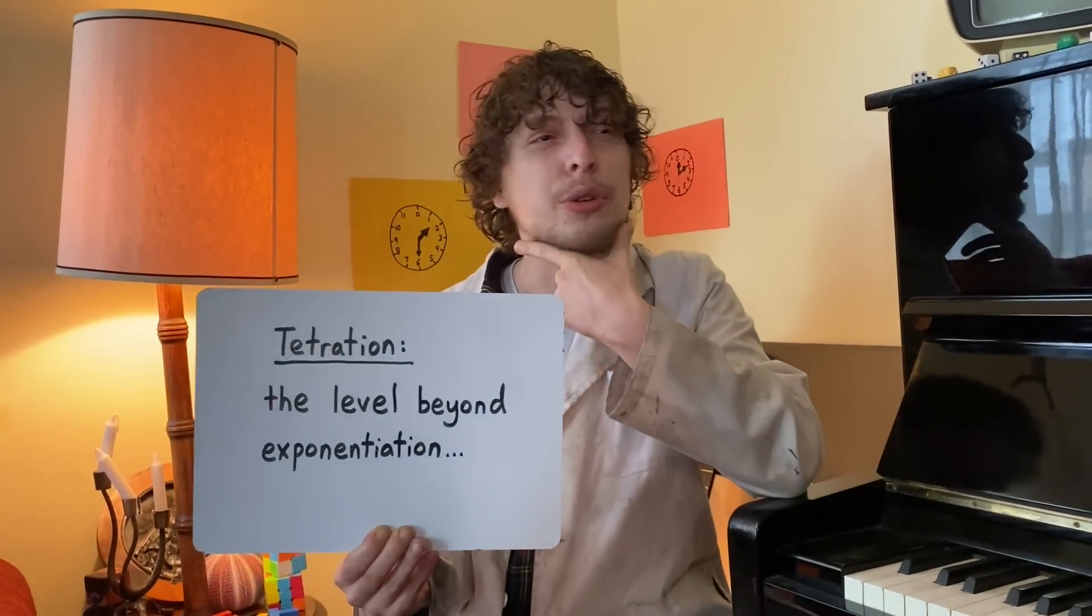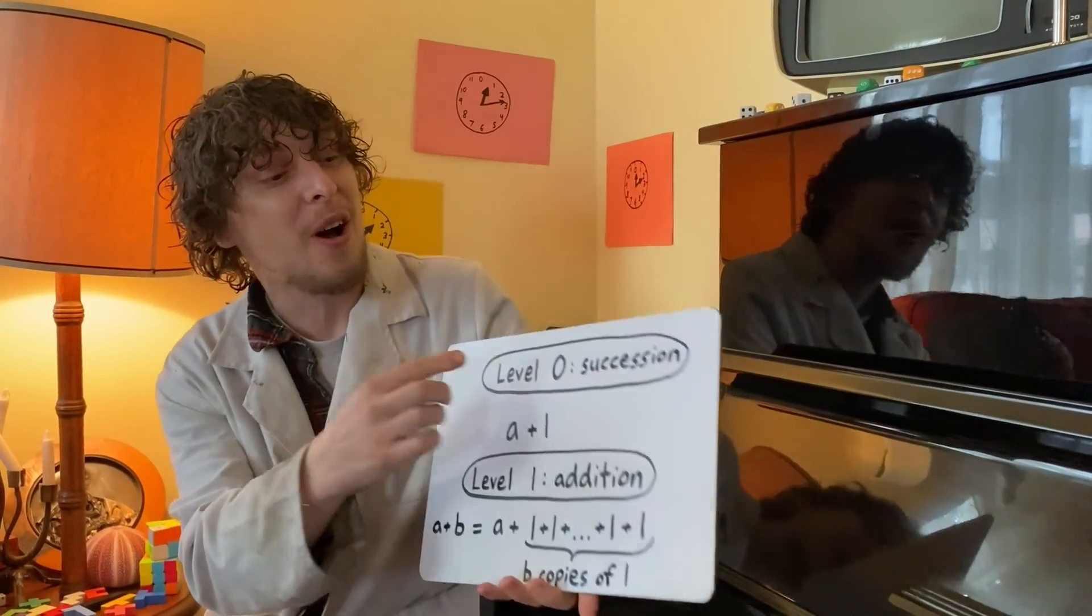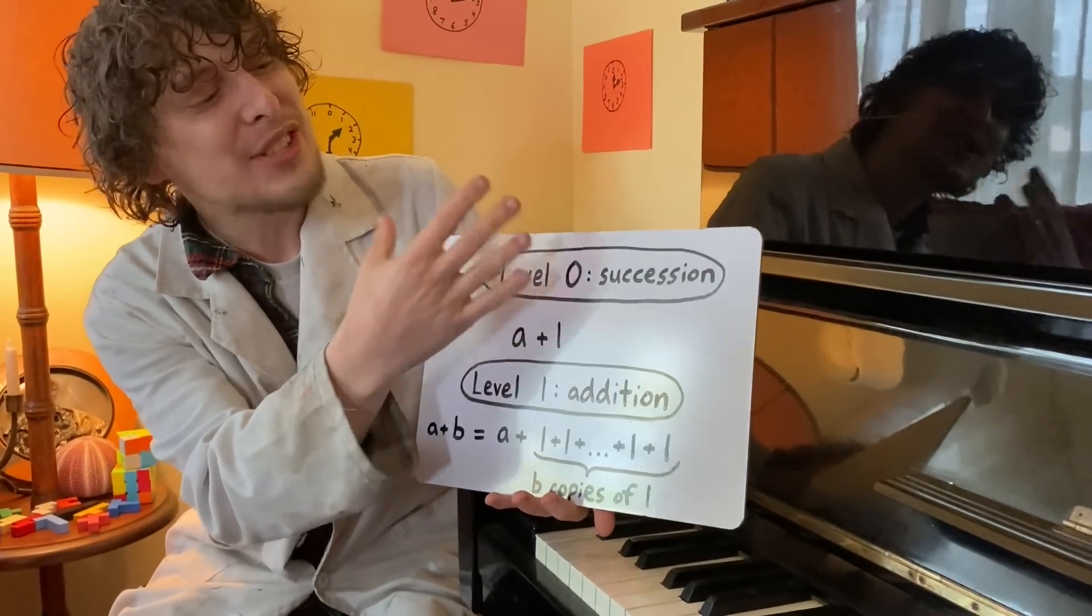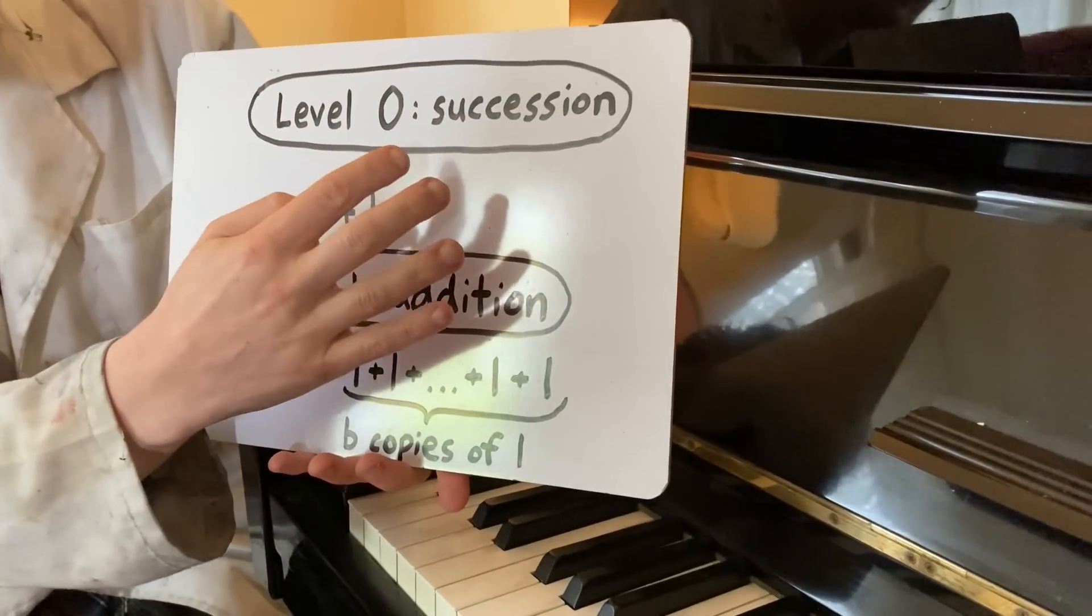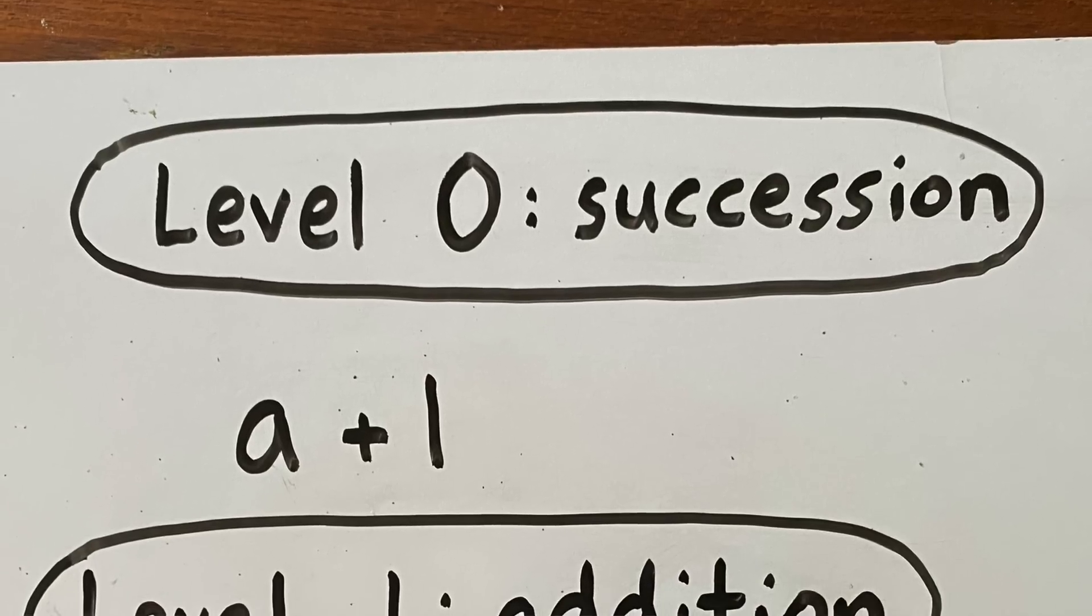When applying operations between numbers, it might seem like there's many possible levels beyond exponents that you could go to, but really there's one that's the most logical. That's because exponents themselves come in a kind of chain of operations, and we're gonna start way at the beginning with one called succession, meaning just adding one to a number. It might seem too basic to be useful, but when you're defining arithmetic it's good to start at the most basic level possible, which is going to the successor of a number.